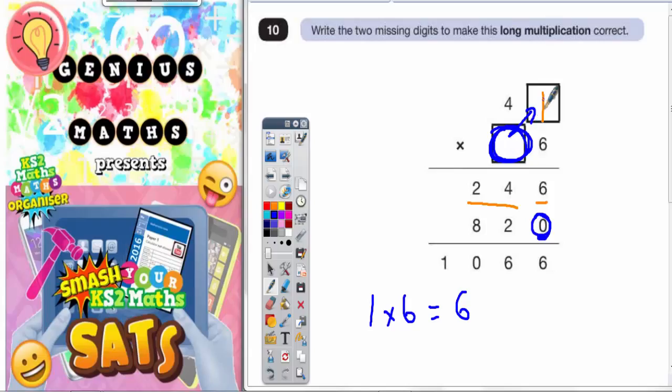So this number times by the 1 needs to give us this 2 here. So what number times by 1 is going to give you 2? Well it's going to be 2, isn't it, because 2 times 1 is 2. So this digit here that's missing needs to be a 2.